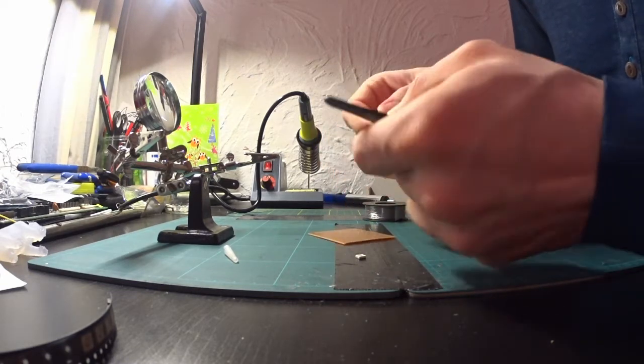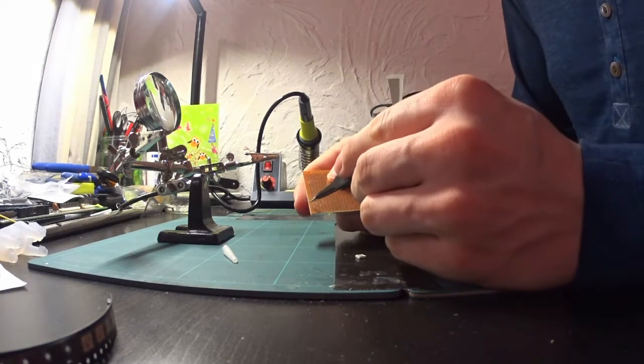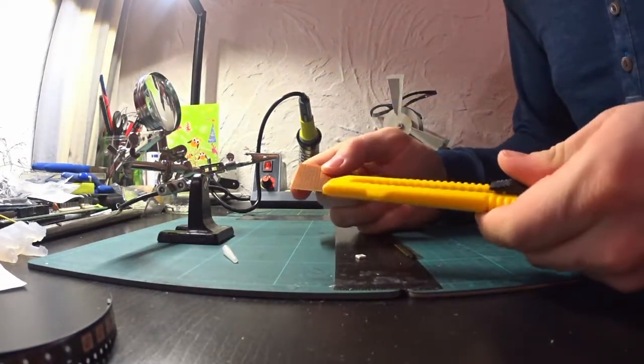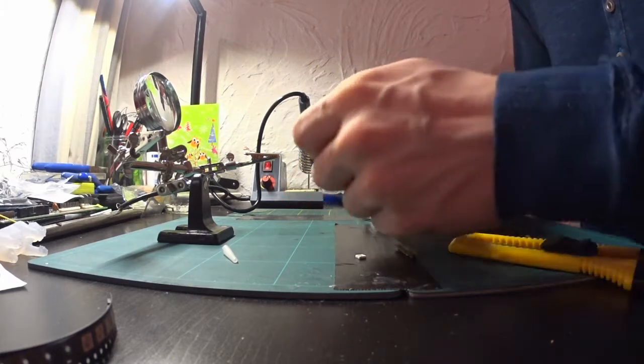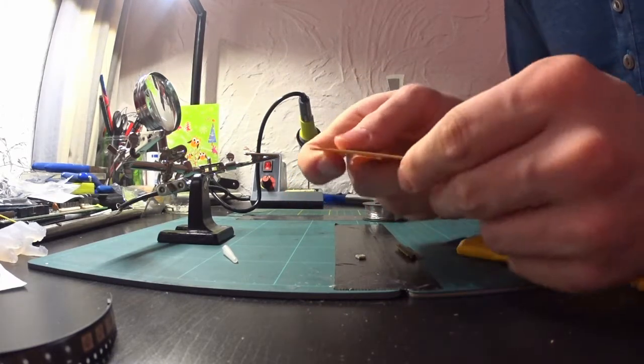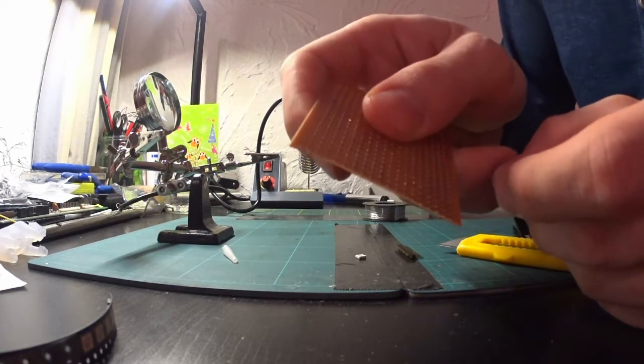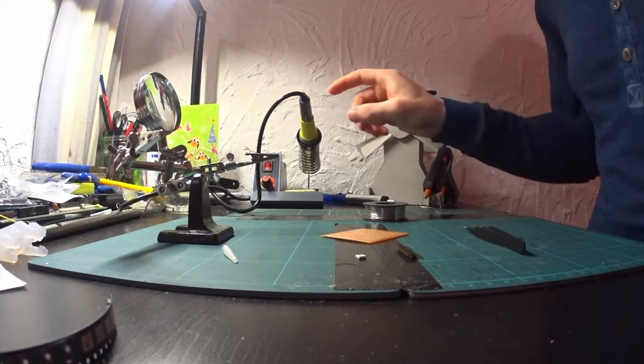To cut out the PCBs, I used a normal cutter knife. I scratched along where I wanted to cut it, and then I just broke it off. You can see it is quite efficient actually. But you can use other tools as well. So let's get to it then.